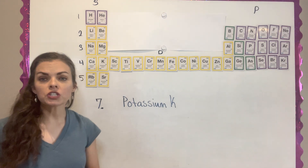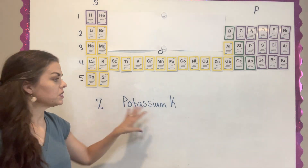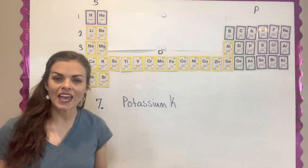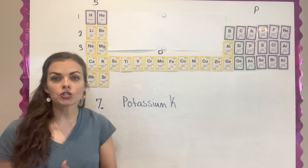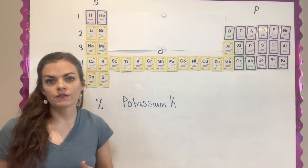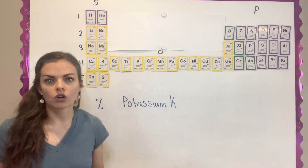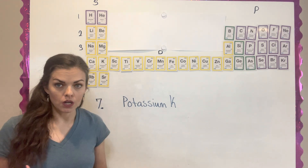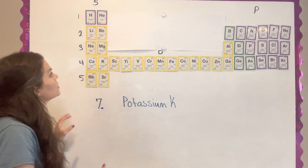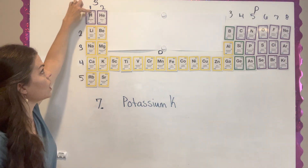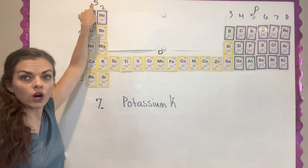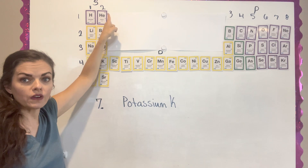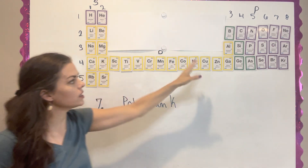For question seven, they give you potassium — they also remind you that potassium is K. So determine its outer valence electrons for the S and the P, which are the ones we're going to concentrate on. So this whole column has one valence electron. This one has two valence electrons.